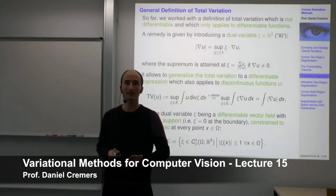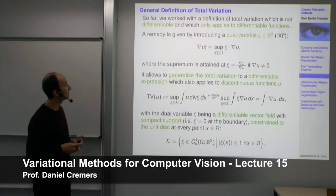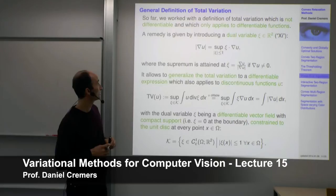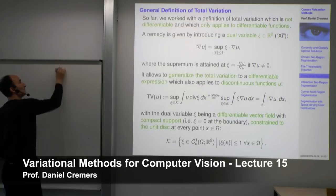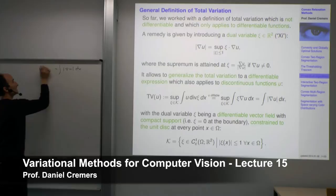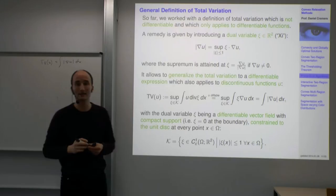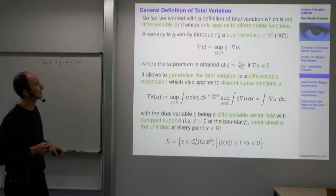Welcome to the next part in our class on variational methods for computer vision. Last time we talked about total variation, and in particular the more general definition of total variation. In a lot of papers, you will find total variation defined as TV of U — the norm of the gradient integrated. That definition has two shortcomings.